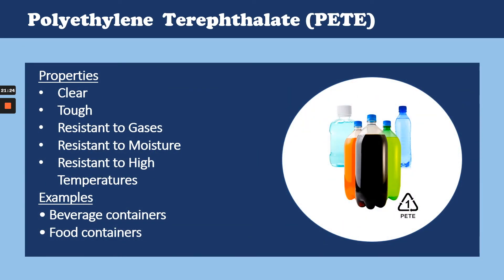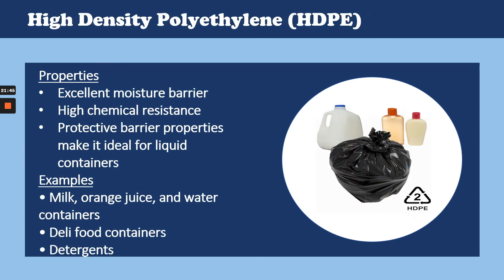Number 1 stands for PET. Number 2 for high density polyethylene. Polyvinyl chloride is number 3. Low density polyethylene is number 4. Polypropylene is number 5. Polystyrene is 6. And number 7 is for all plastics that do not come within numbers 1 to 6. PET or polyethylene terephthalate is a polymer that is clear, tough and resistant to gases, moisture and high temperatures, and is used for making beverages and food containers, as well as for storing chemicals for household cleaning purposes. High density polyethylene has an excellent moisture barrier and good chemical resistance, making it ideal for containers storing liquids. Milk, juices, water containers and detergents are all stored in HDPE bottles.